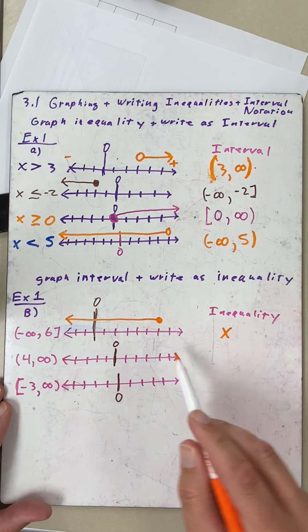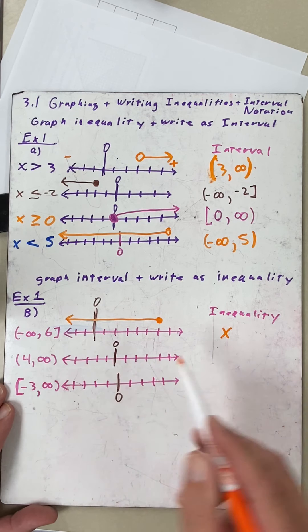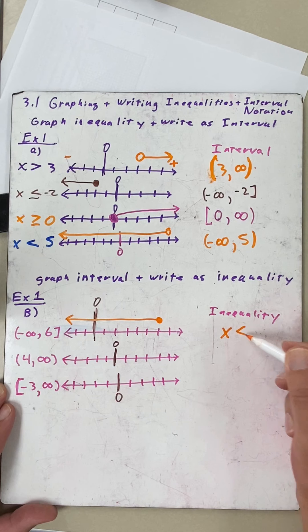As I write the inequality, remember that the variable is always over here on the left side. So we're going to go x, and now how do these numbers compare to six? They are all less than.